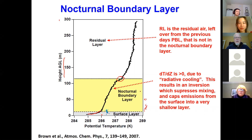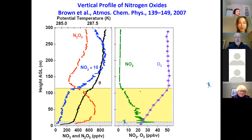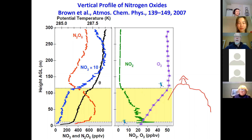Thinking about exposure of people to pollutants, we can get a very different picture if somebody is at the surface versus more elevated. Looking up just 100 meters, the chemistry can be very different. If you're living at the surface, or in a condominium a few hundred meters up, or in a subdivision on top of a mountain, your exposures can be very different just by moving vertically 100 or a few hundred meters.